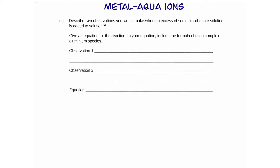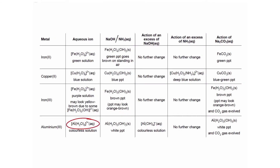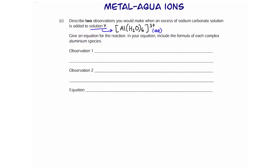Part C: describe two observations when excess sodium carbonate is added to solution Y, which contains the aluminium hexa-aqua ion. Looking at our table, we can see the observations: we're going to form a white precipitate, and also carbon dioxide. So observation 1 is a white solid precipitate is formed, and observation 2 is effervescence/bubbling because of carbon dioxide.